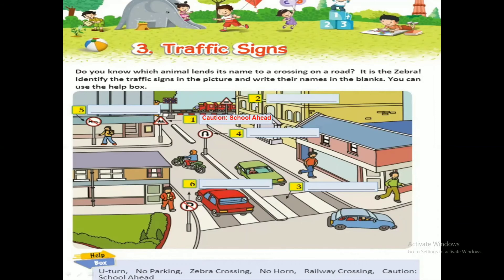Now come to the second symbol. You can see a chain and a railway path. It indicates that there is a railway crossing on the road, meaning you have to pay attention and then cross or move along the road. This symbol is known as railway crossing.